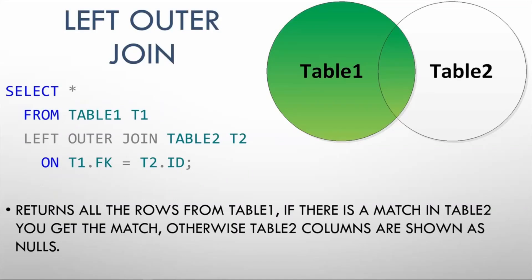It's showing the same tables and what it's going to do is it's going to return all the rows from table one. If there's a match in table two, you will get the match, otherwise the table two columns will be shown as nulls. For instance, in the example we looked at a minute ago, there were two people, Johnny and Karen, who did not have a favorite color and they got left out when we did the inner join.